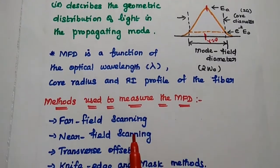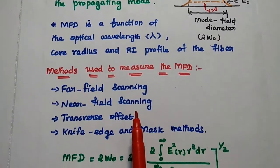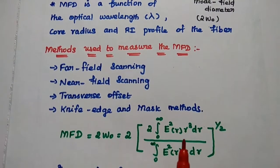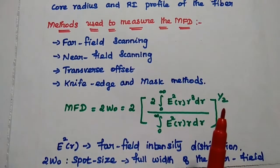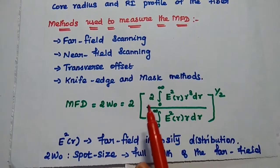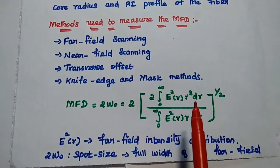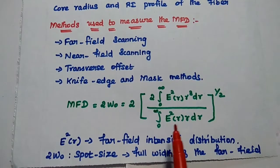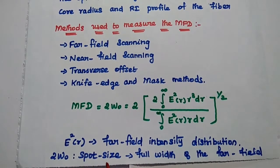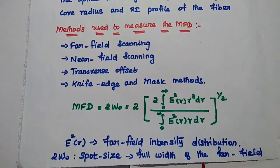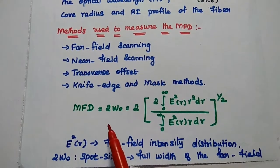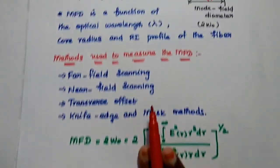There are different methods used to measure the MFD: far-field scanning, near-field scanning, transverse offset, knife edge, and mask methods. The mode field value is given as: 2W₀ = 2 × [2∫E²(R) R³ dR / ∫E²(R) R dR]^(1/2). Here, E²(R) is the far-field intensity distribution of the light propagation. 2W₀ is the spot size, that is the full width of the far field.